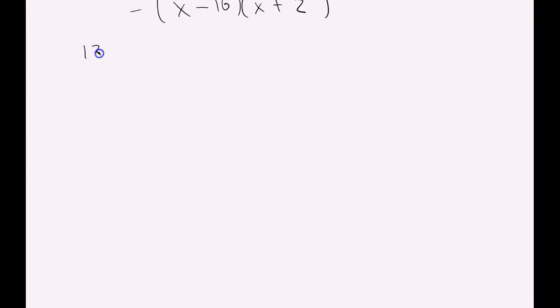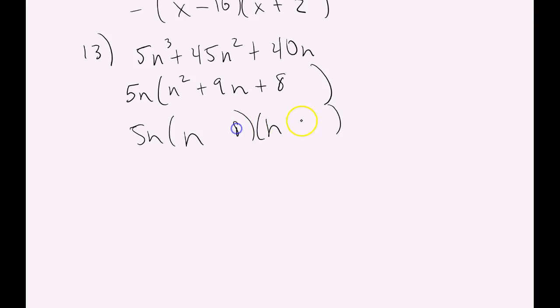Number 13. 5 n cubed plus 45 n squared plus 40 n. 5 definitely goes into all those and there's an n in all of those. So this will become an n squared plus a 9 n plus an 8. And from here is a piece of cake. This one's really easy.